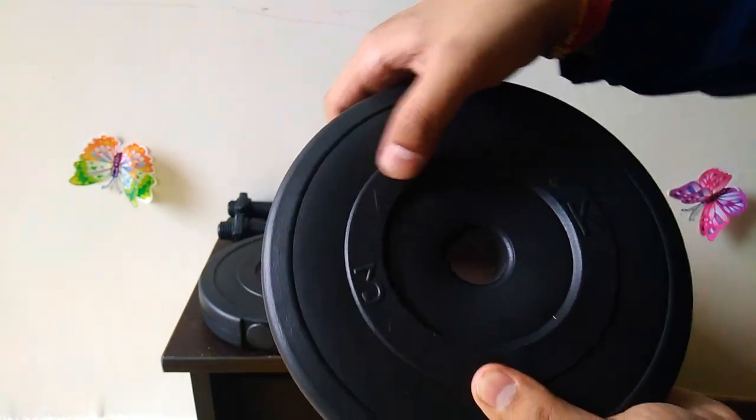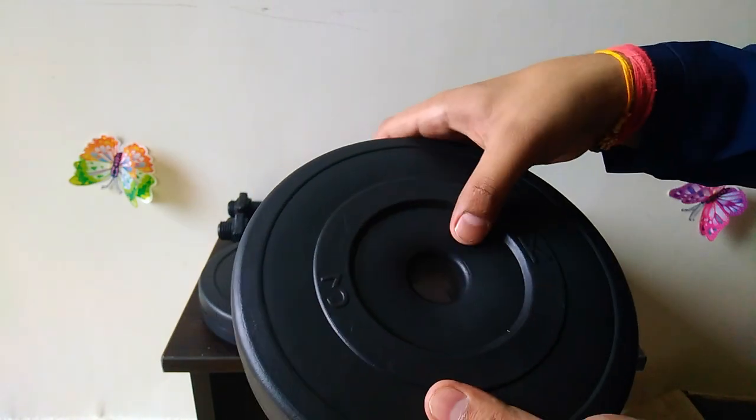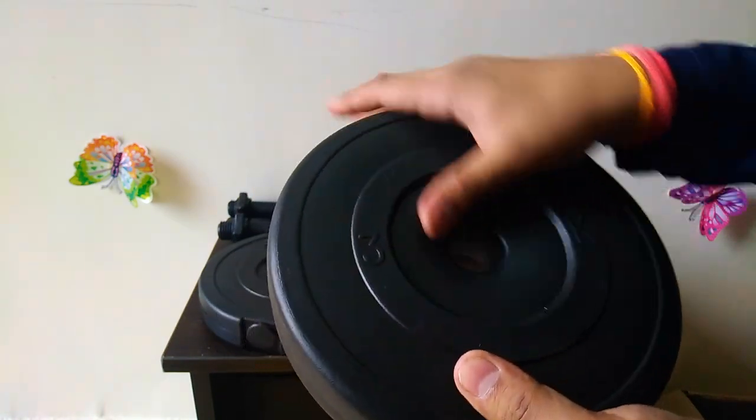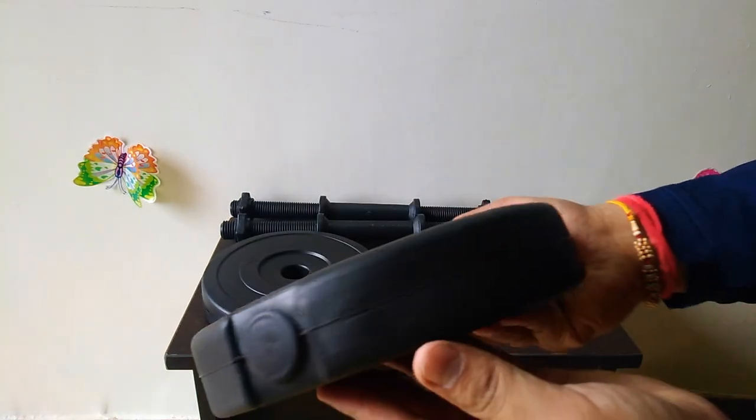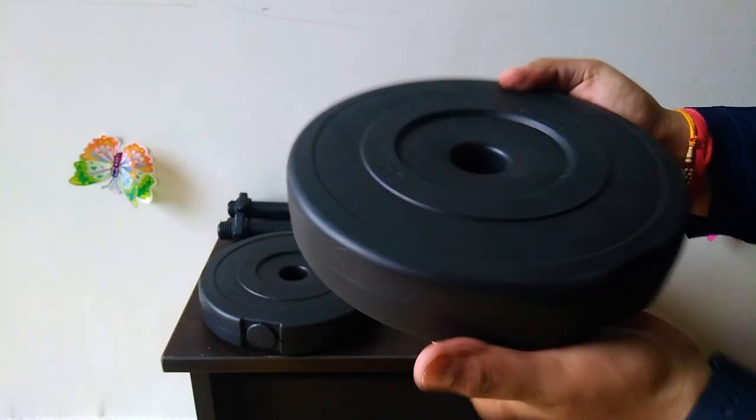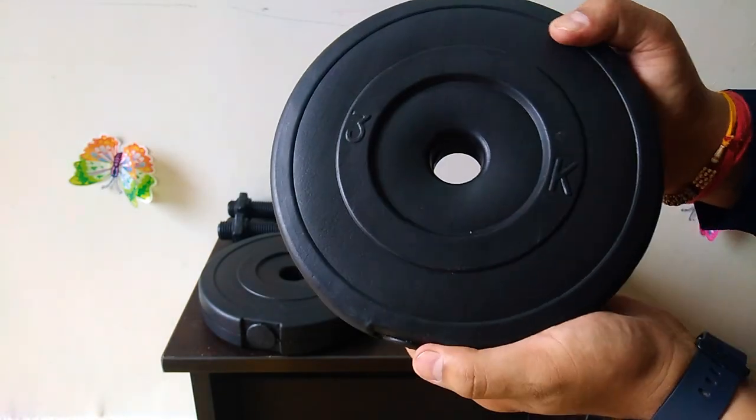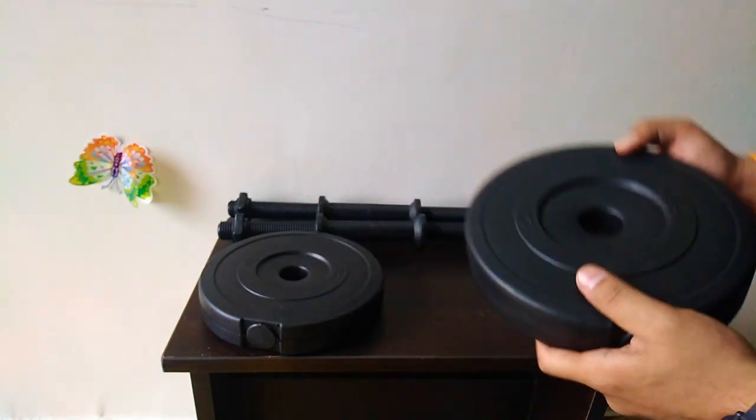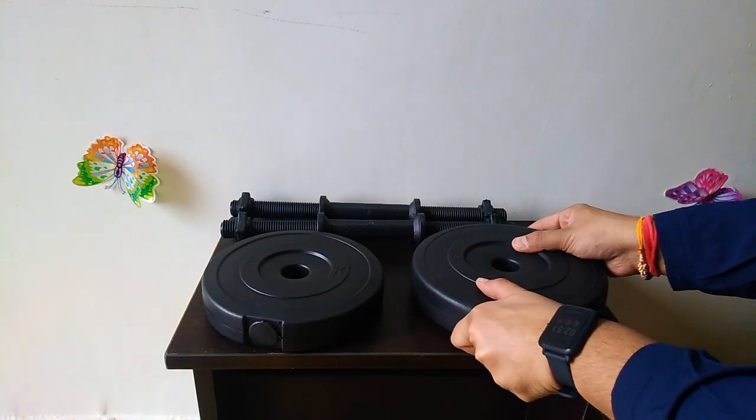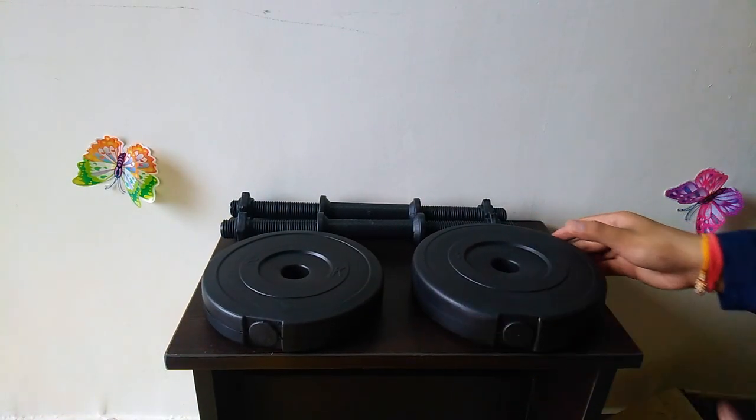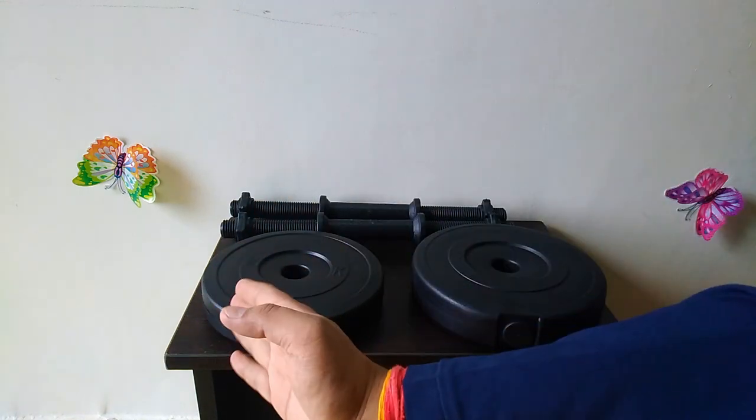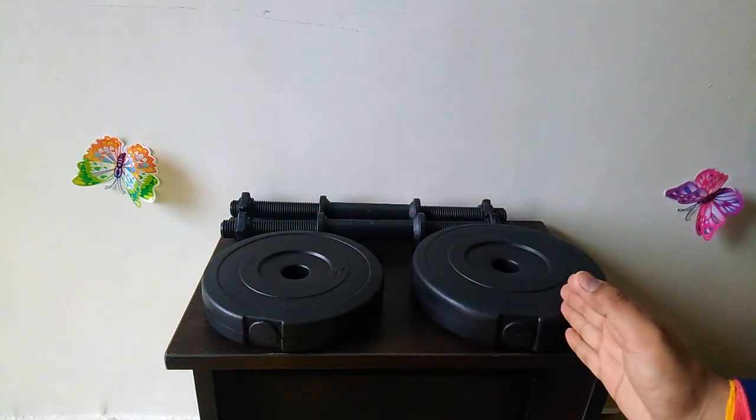One thing: you cannot be harsh on these dumbbells, you have to take care of them as you take care of other important stuff. I will keep this 3kg plate on the other side of the table near the 2kg plate. I'll keep the rest of the plates, 2 on 2 and 3 on 3.